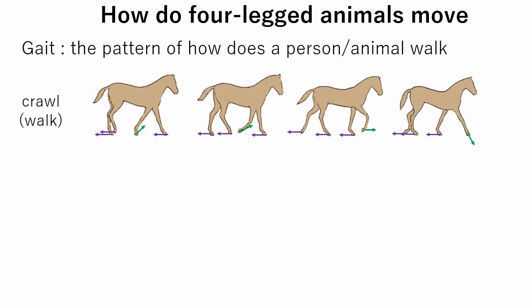This gait is used when animals are moving over broken ground. Note that while the animal swings one leg, other legs are slowly moving backwards relative to the body, allowing the animal to move forward.